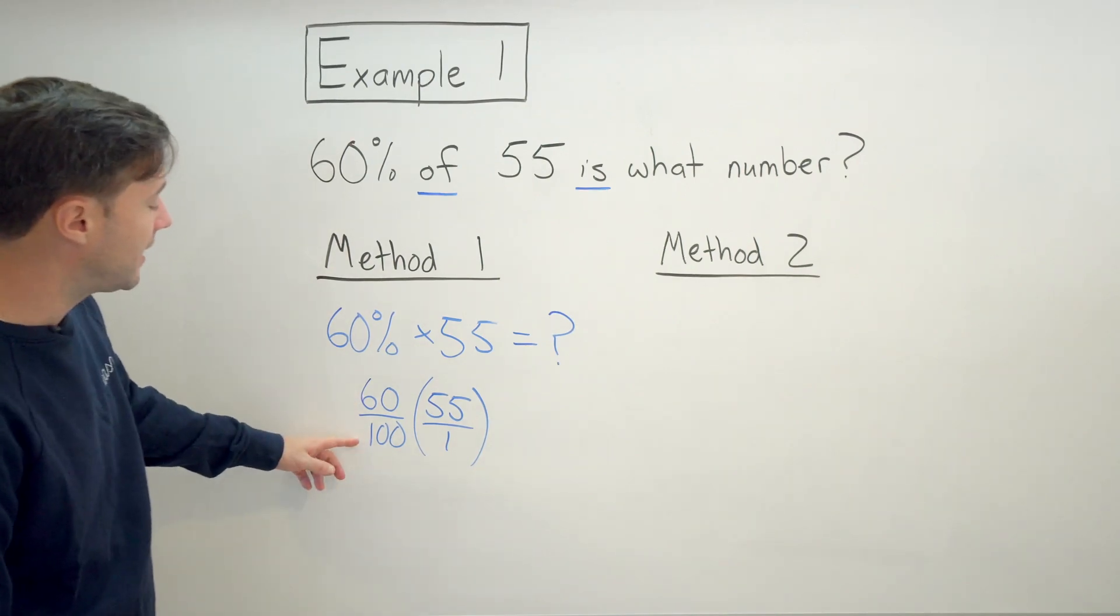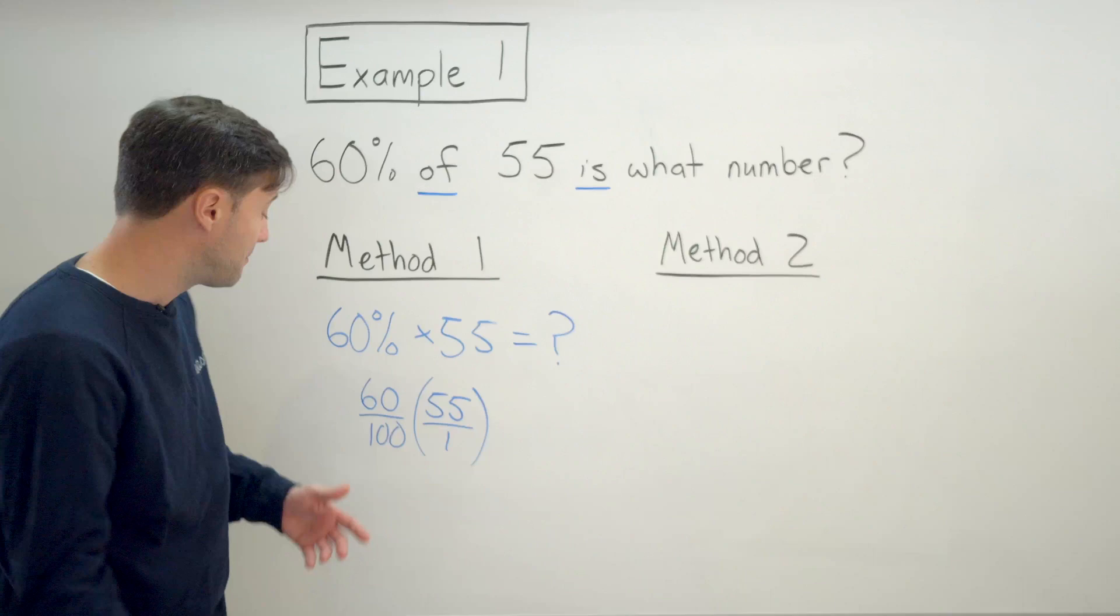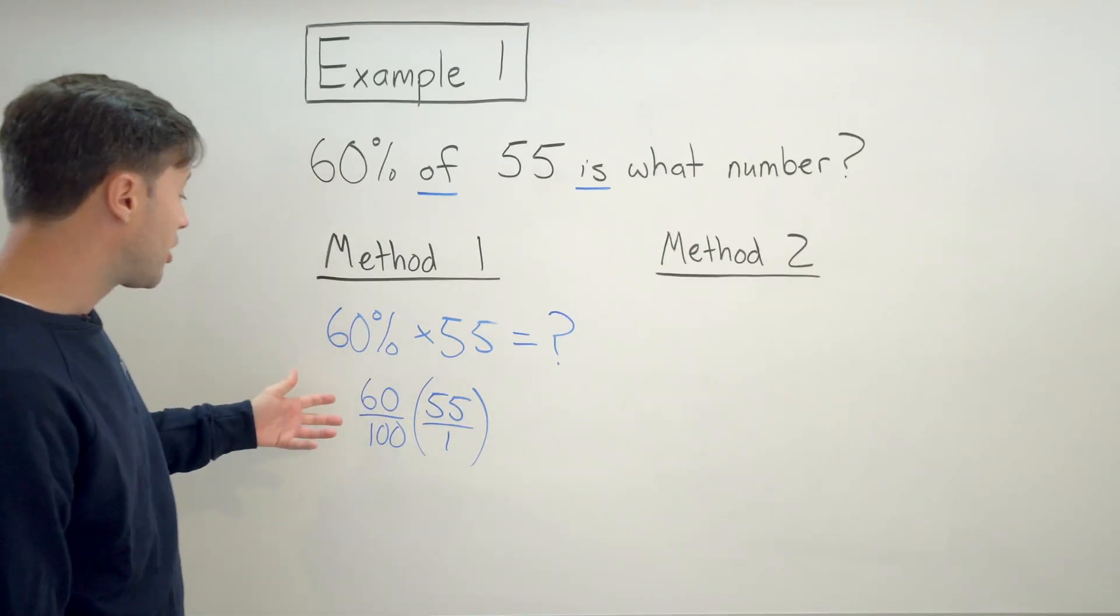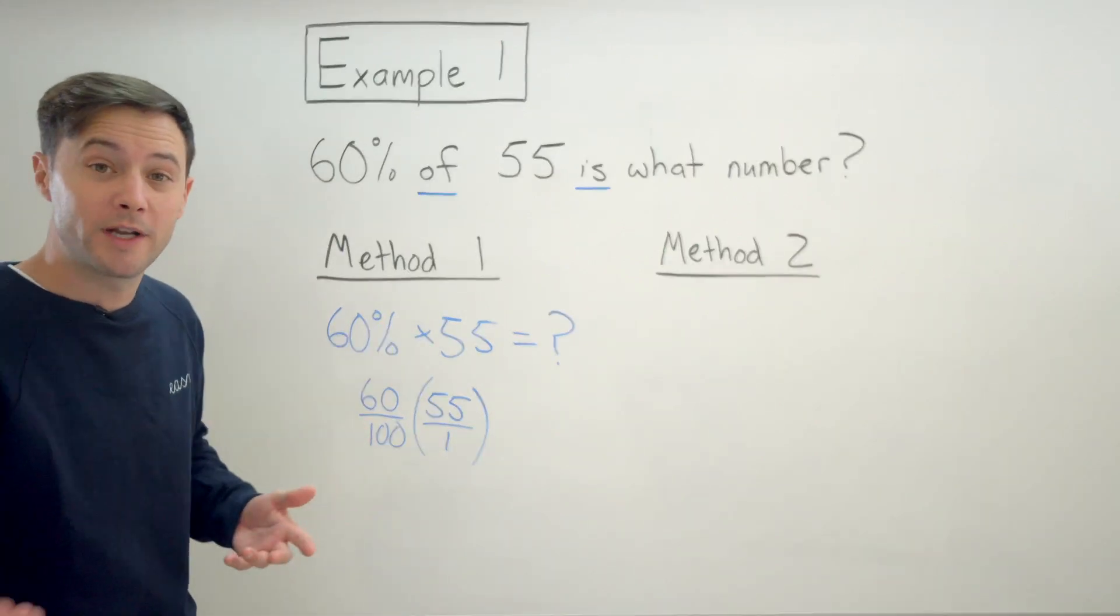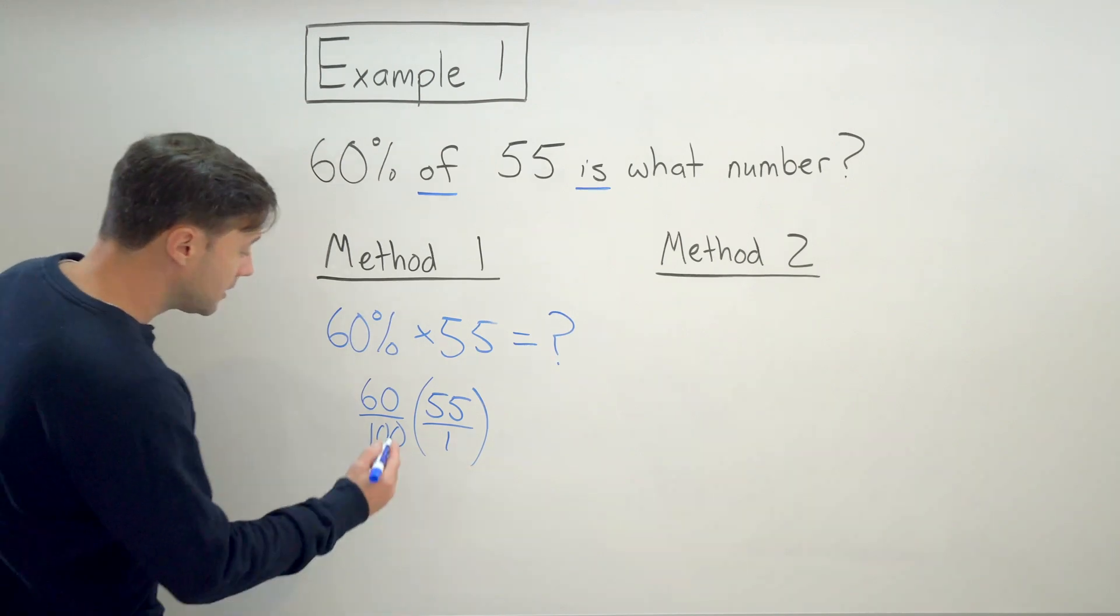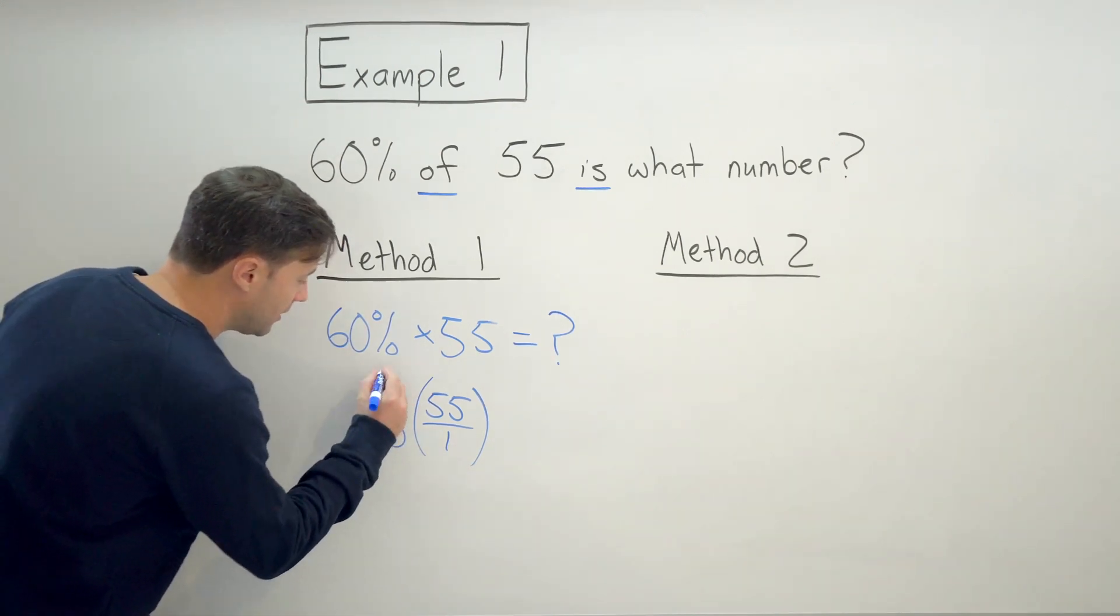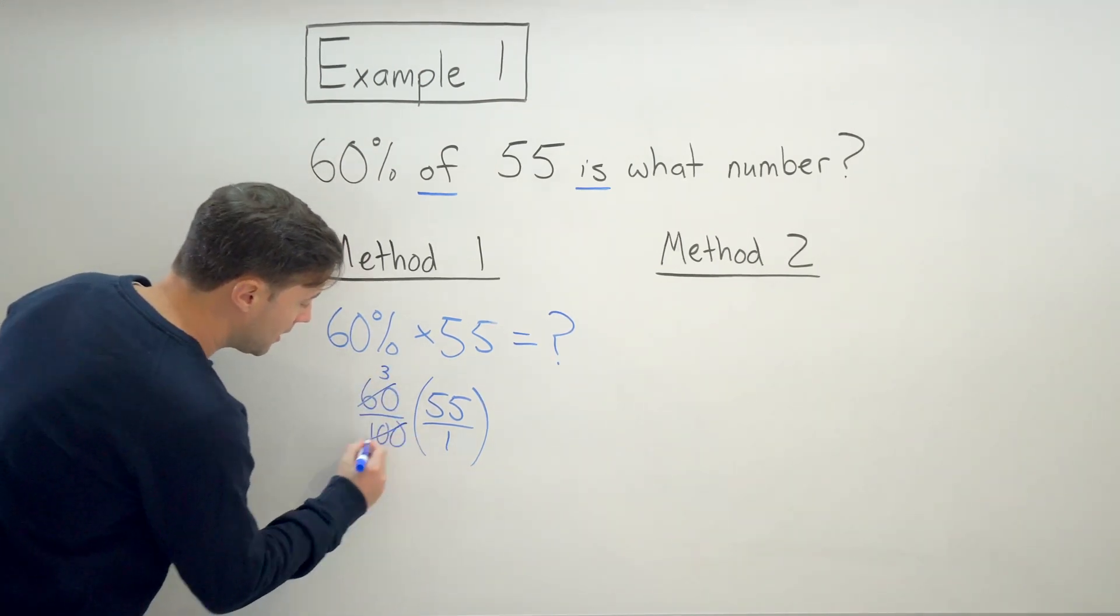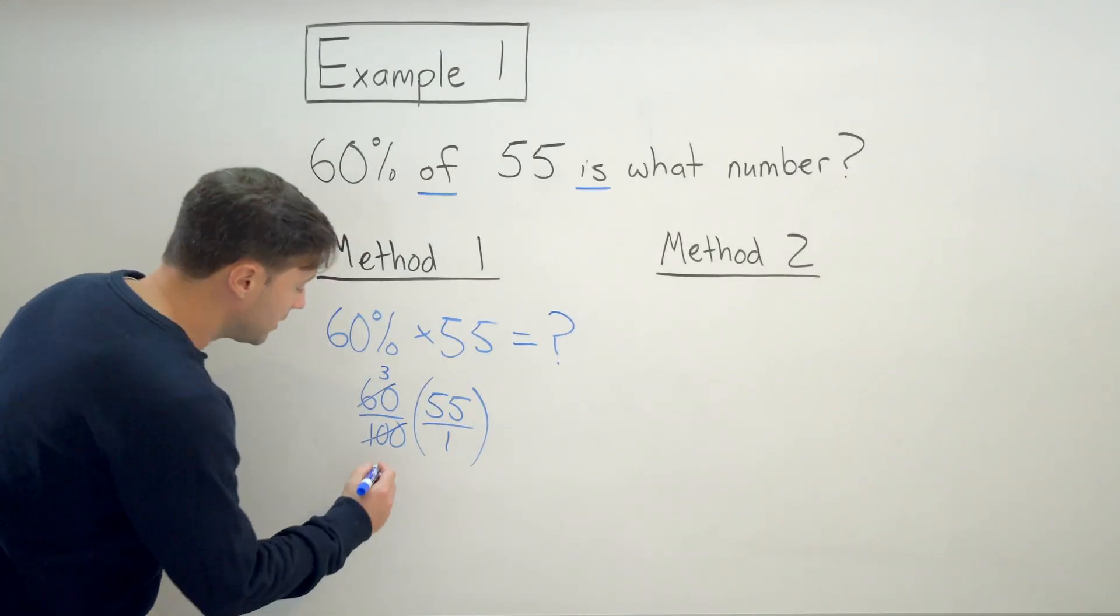So right away I can tell, well, 60 and 100, I can simplify both by 10. But I could also do it by 20. 20 is a common factor of both. So 60 divided by 20 would give me 3. 100 divided by 20 would give me 5.